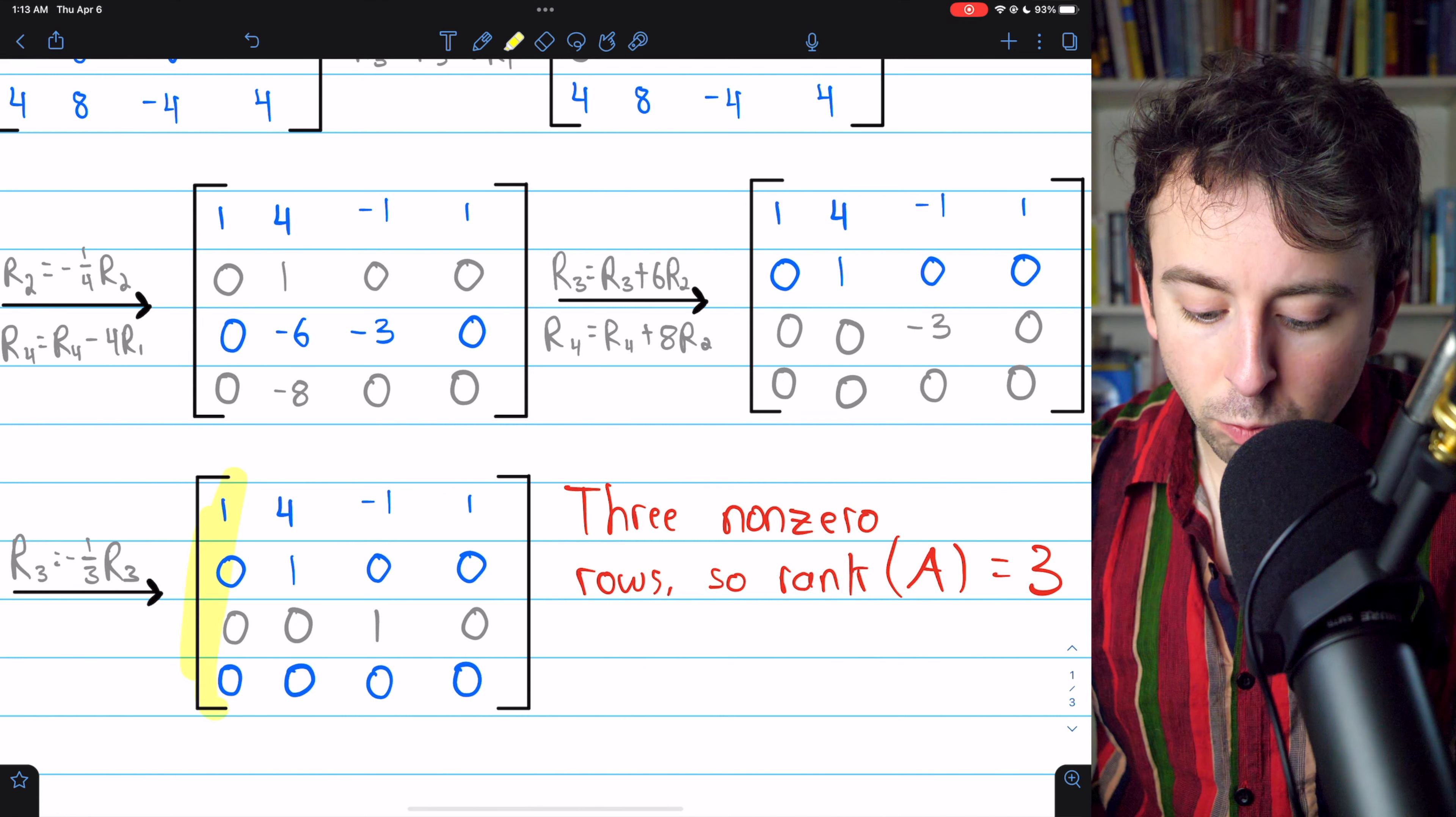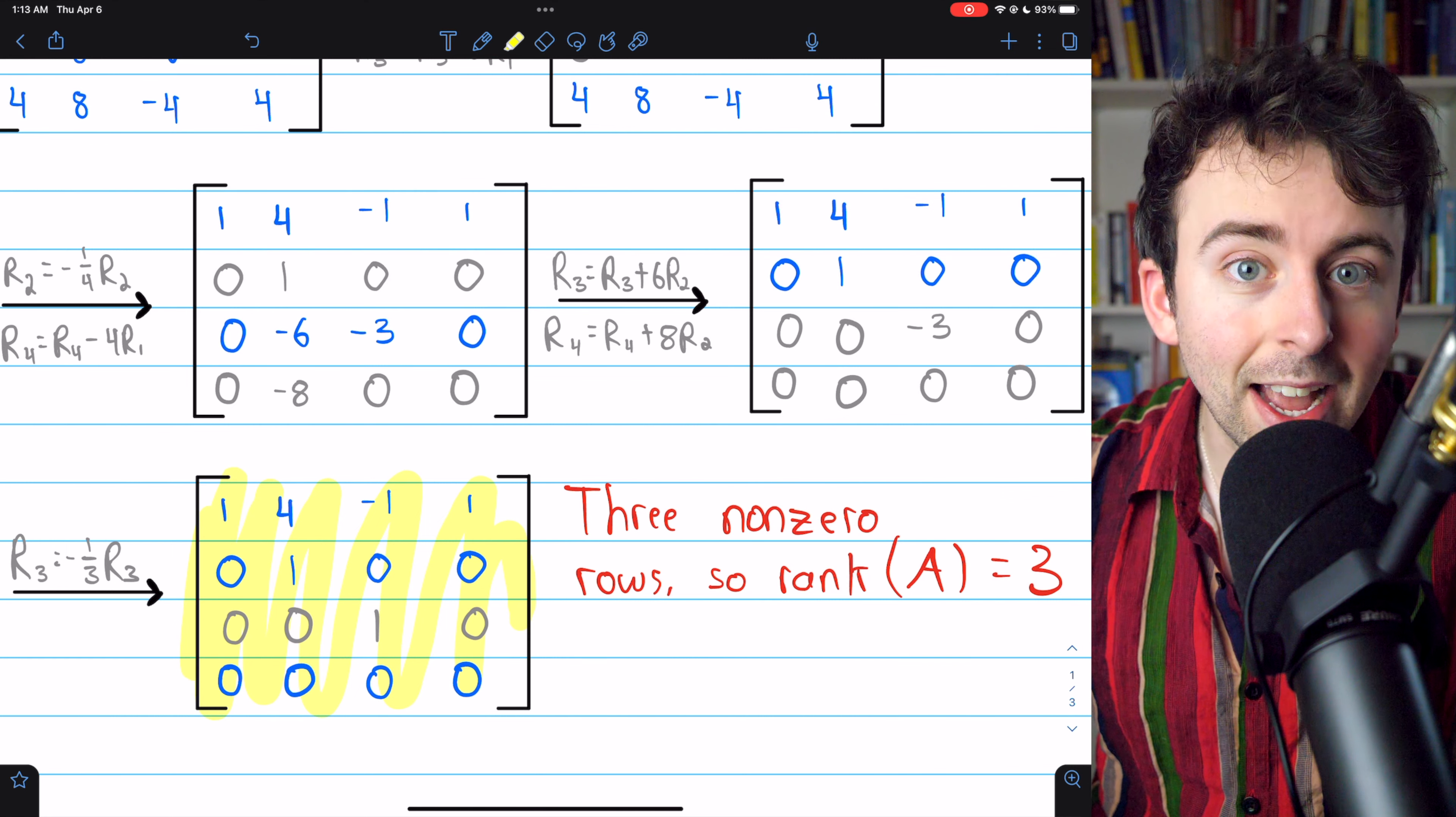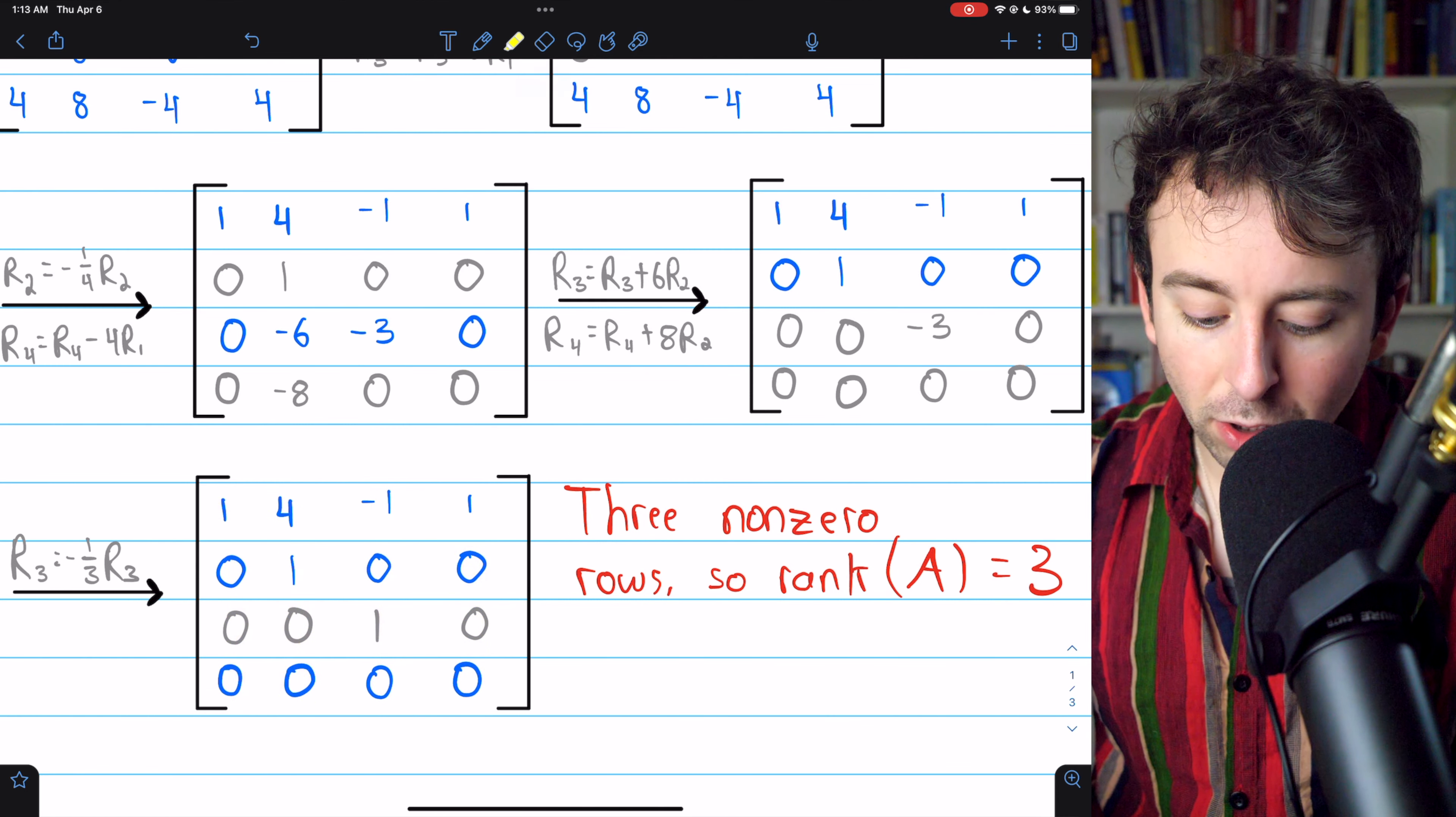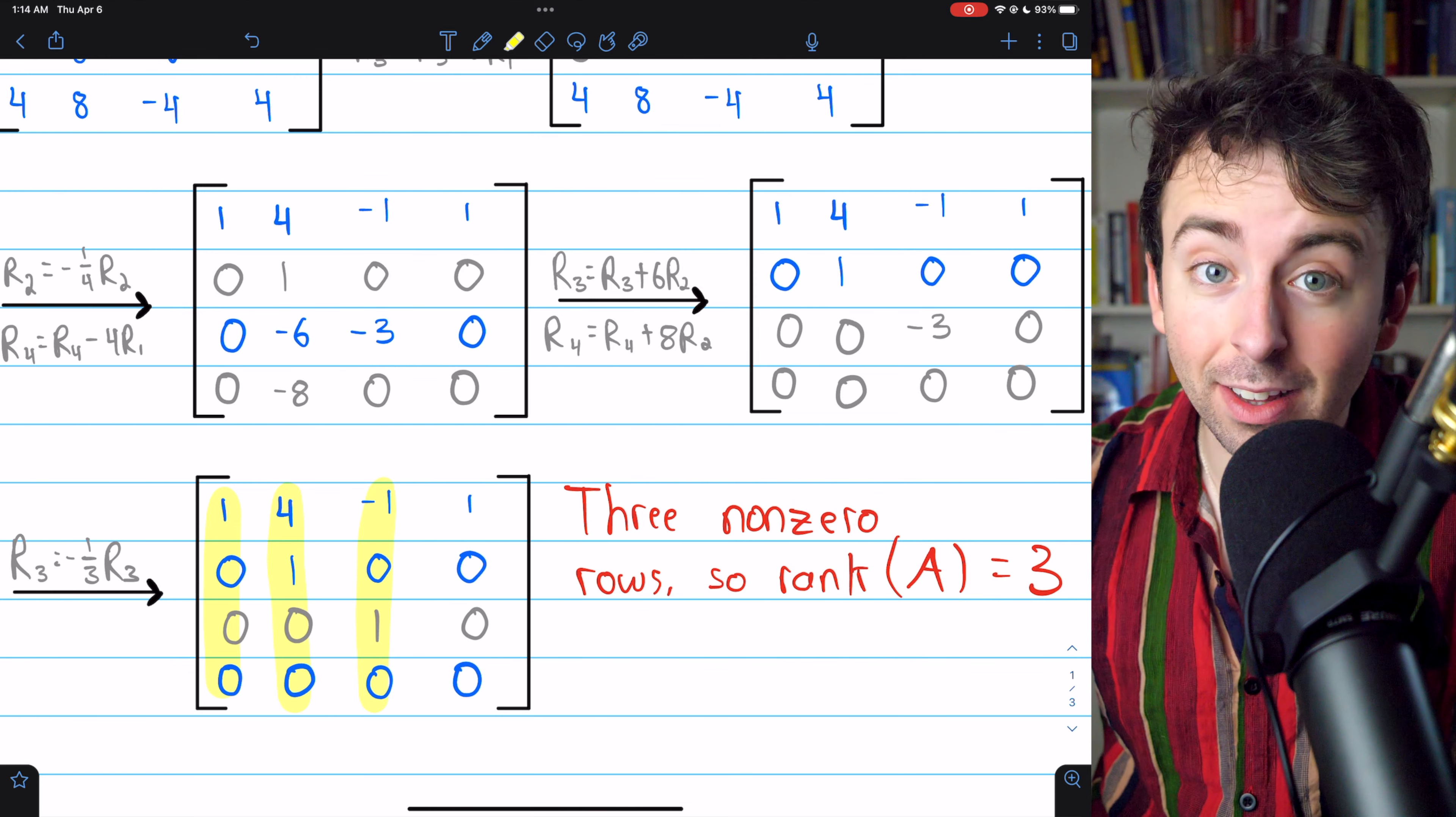Let me emphasize that this is row echelon form. It's not reduced row echelon form. Reduced row echelon form is unnecessary to establish the rank of a matrix. In reduced row echelon form, each leading one has zeros above and below it, which we see we don't have here. But that's not a problem.